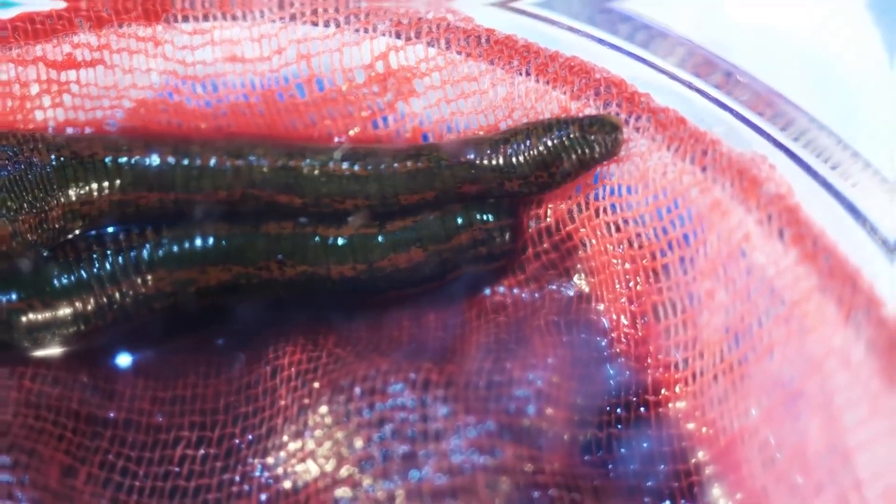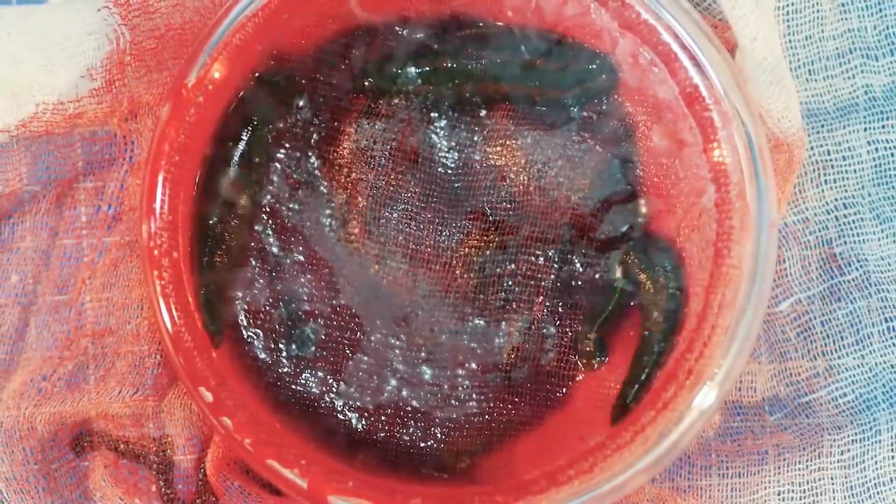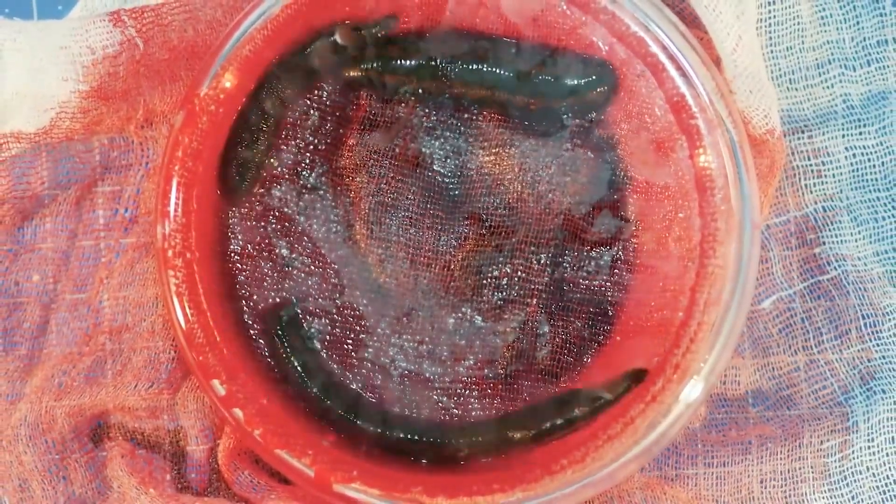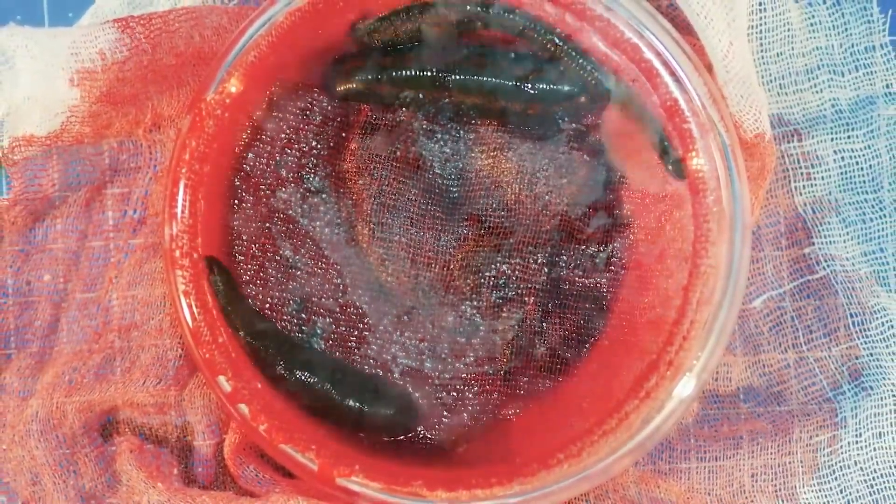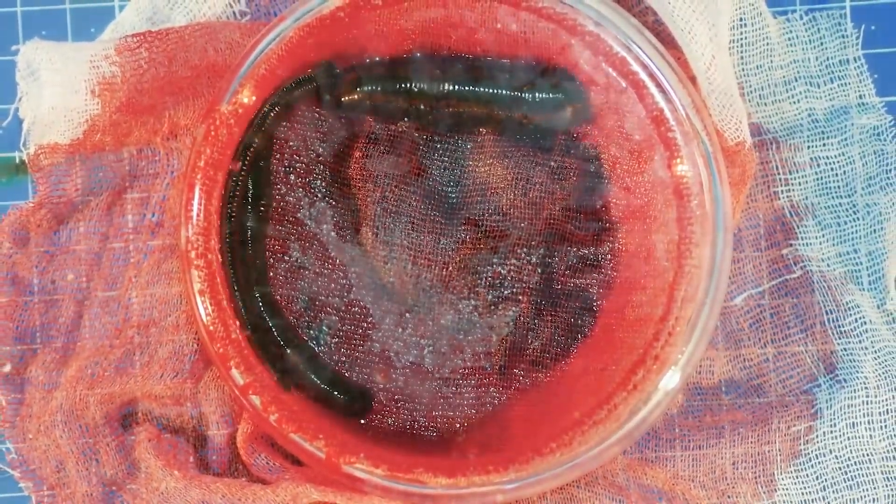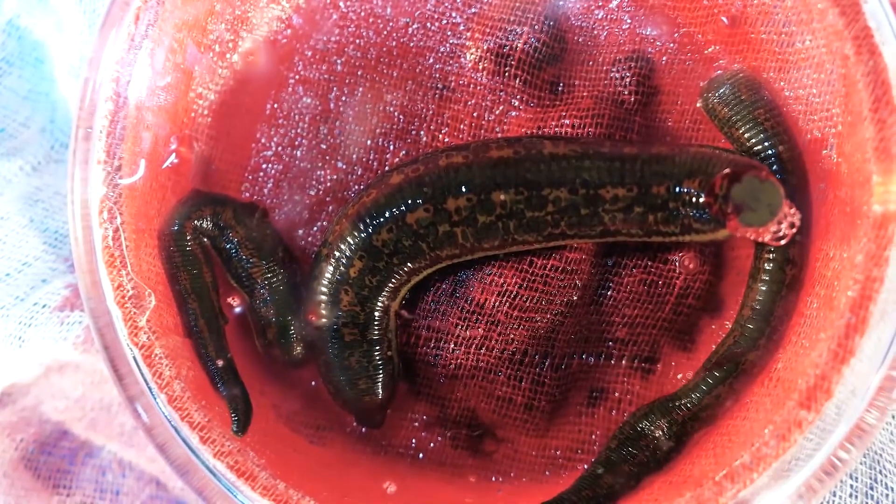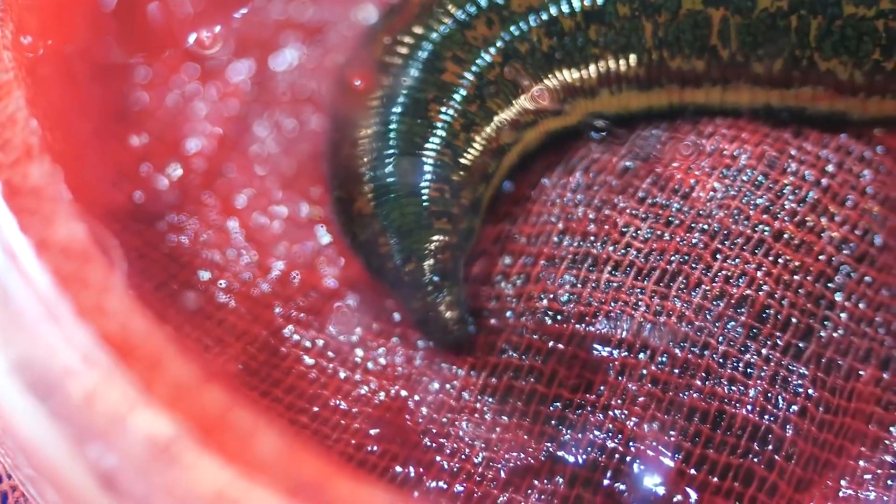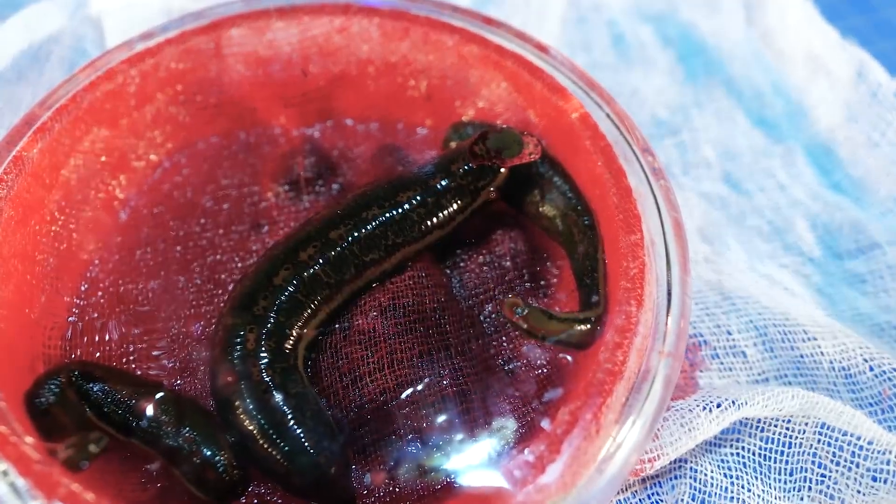It was decided to break the clots to get at least some liquid blood, pour the substance into a petri dish and cover it with gauze. Place the leeches on top and cover with a second beaker. Miraculously, one of the three realized that here was the long-awaited food.